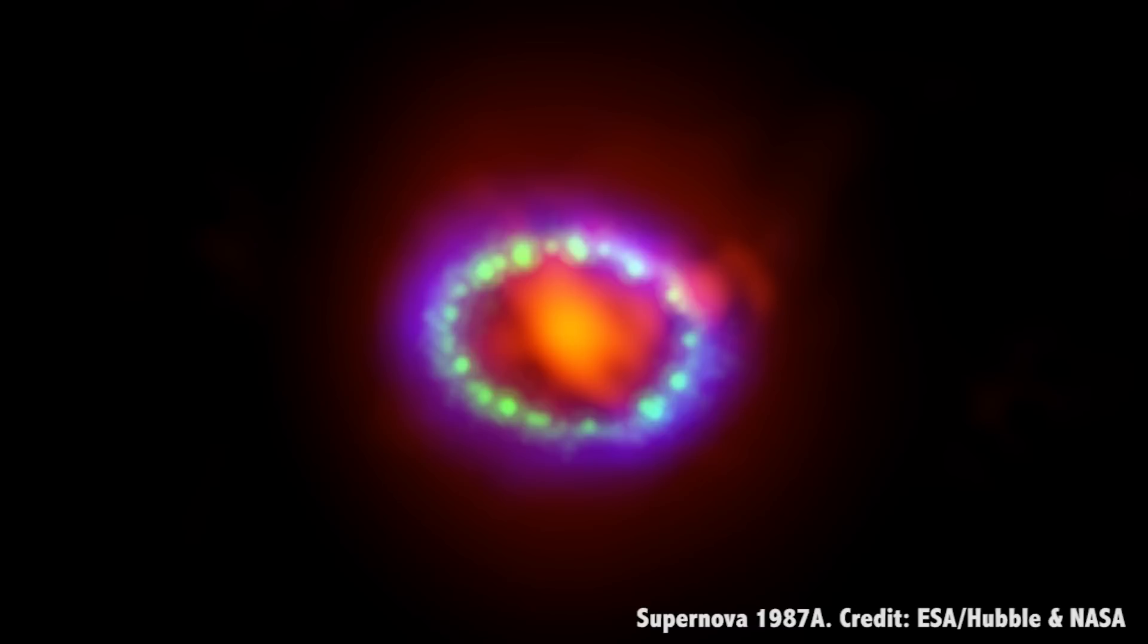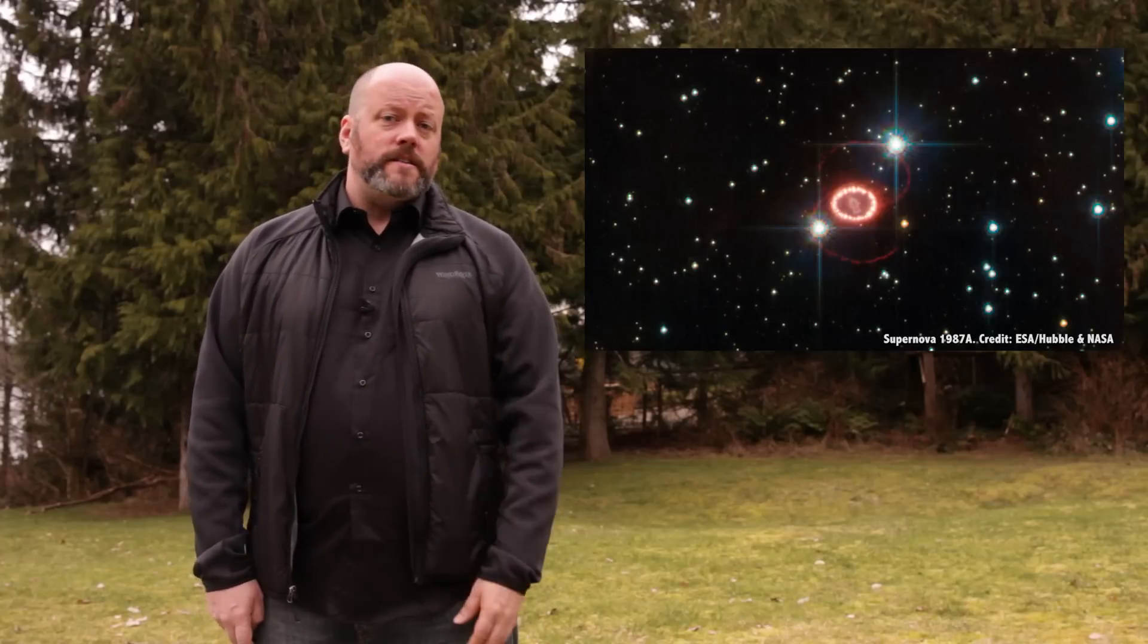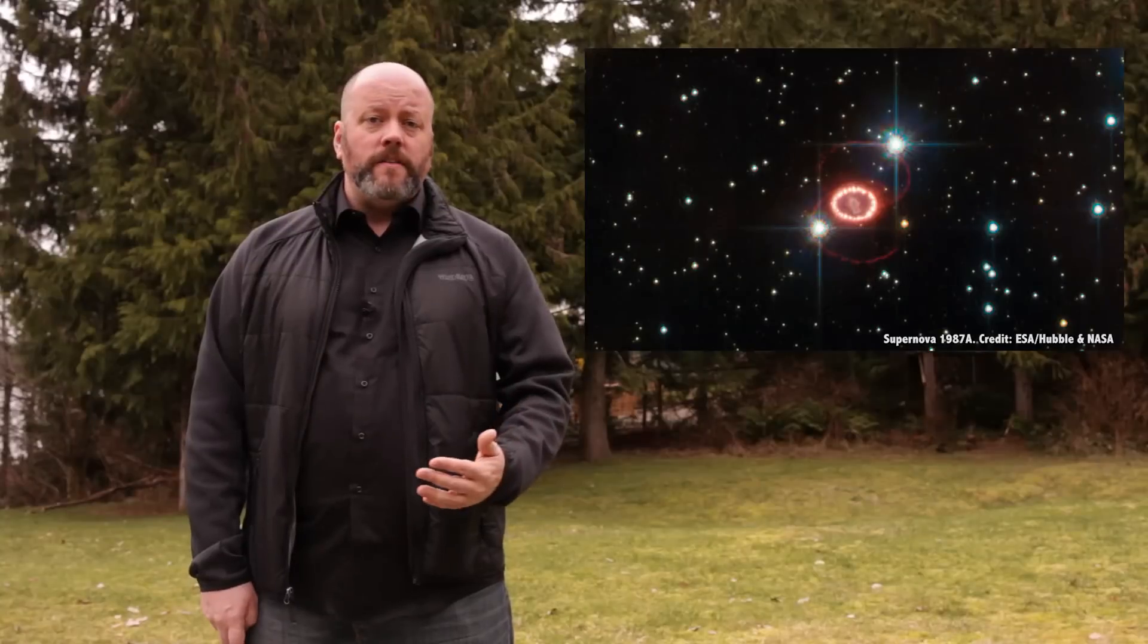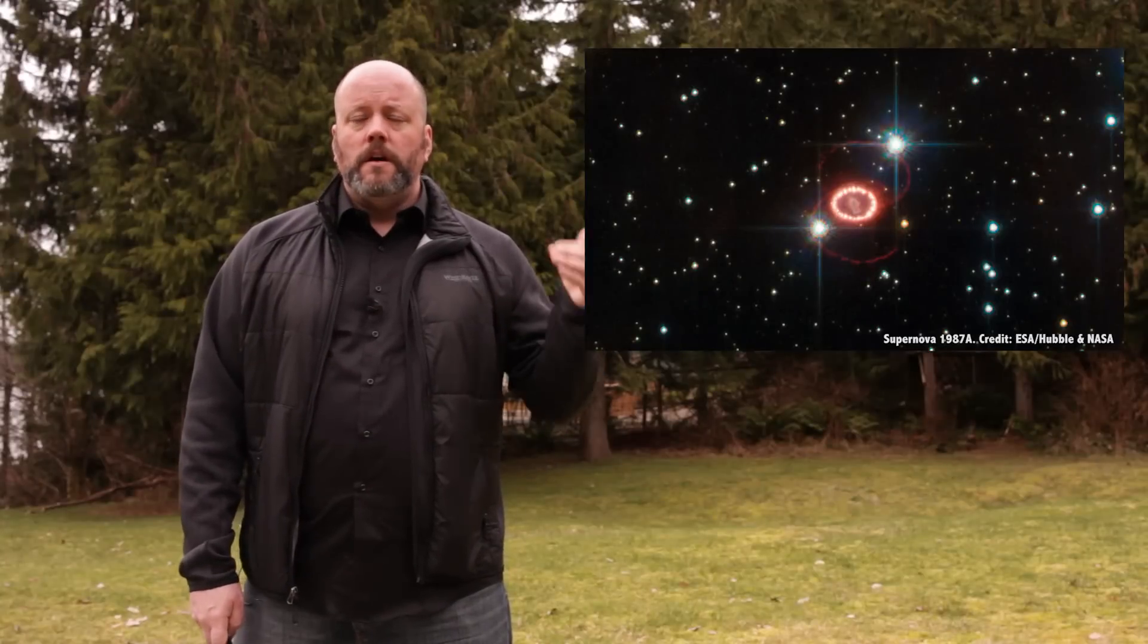Supernova 1987A, named to commemorate the induction of the first woman into the Rock and Roll Hall of Fame, the amazing Aretha Franklin. Well, actually that's not true. It was the first supernova that we saw in 1987. But we should really name supernova after things like that. Still, 1987A went off relatively nearby, and took 85 days to reach its peak brightness, slowly declining over the next two years. Powerful telescopes like the Hubble Space Telescope can still see the shockwave expanding in space decades later.